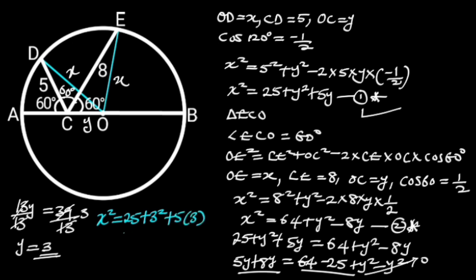Simplifying the right side will give us 25 plus 9 plus 15, which is equal to 49. So X squared is equal to 49.